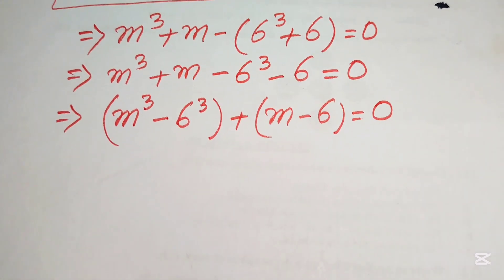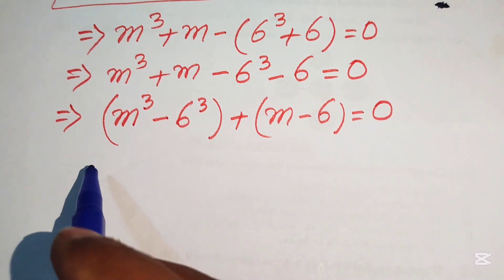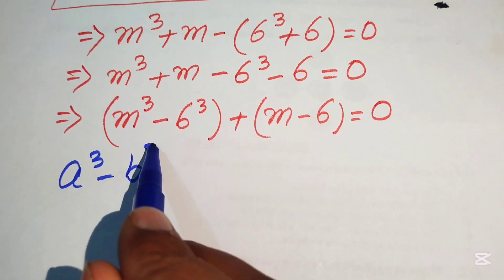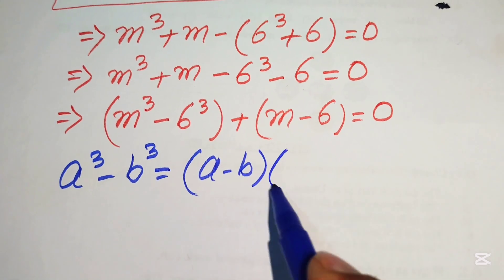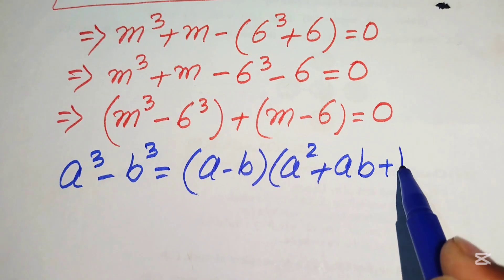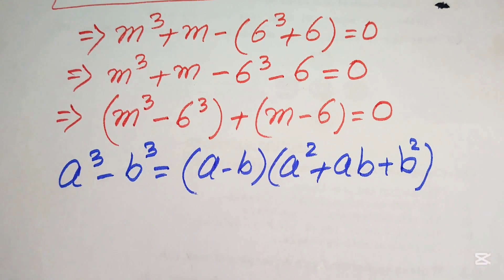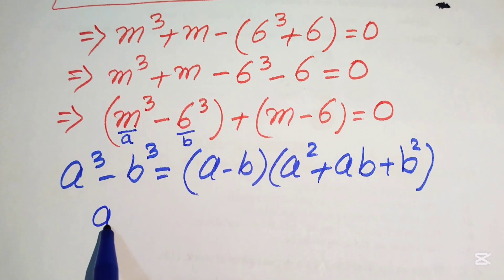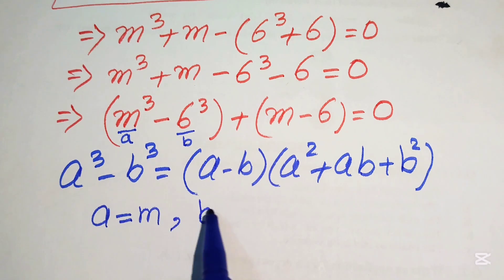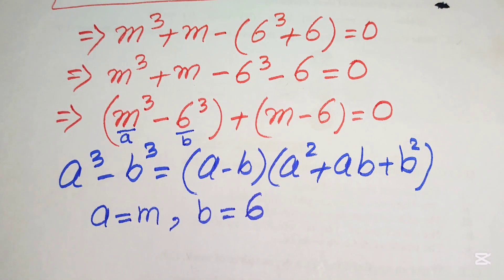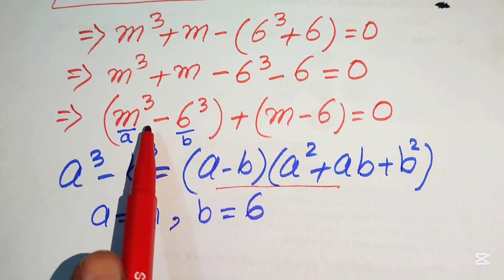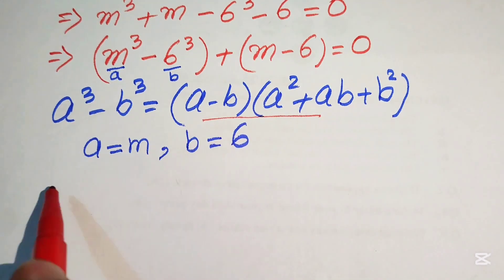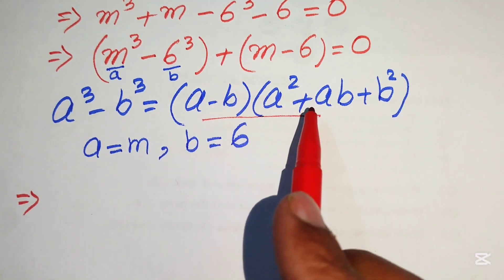To move forward, we use the cubic difference formula: a³ − b³ = (a − b)(a² + ab + b²). Here our a = m and b = 6, and we substitute these values into the right-hand side of the formula.